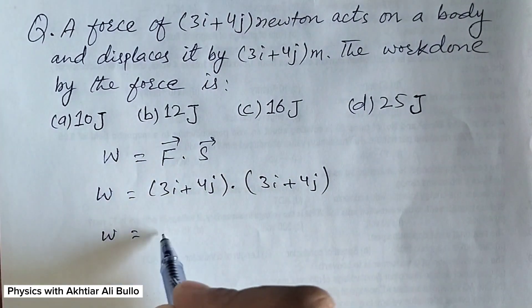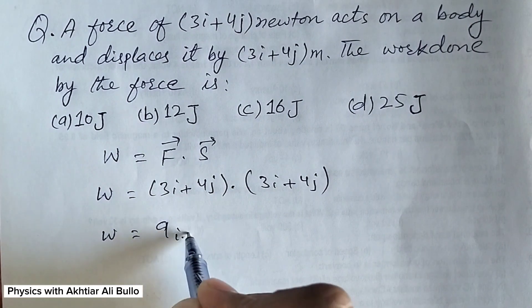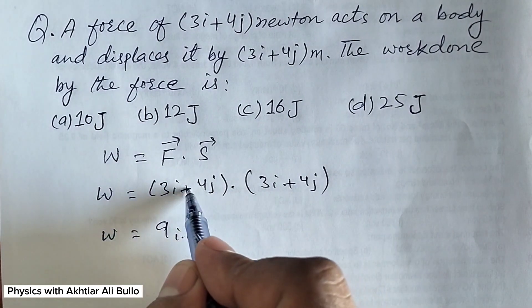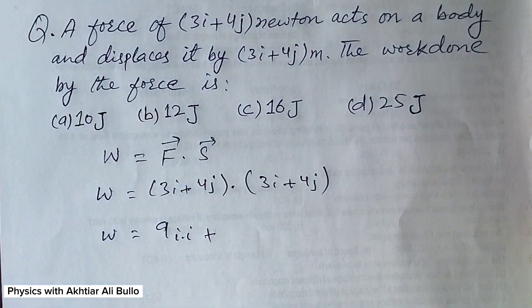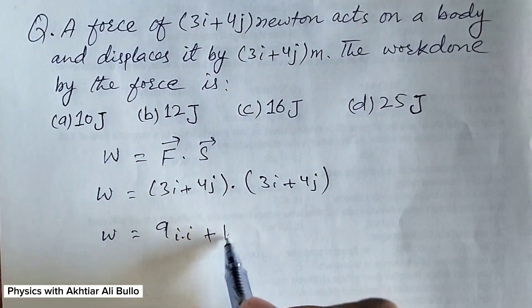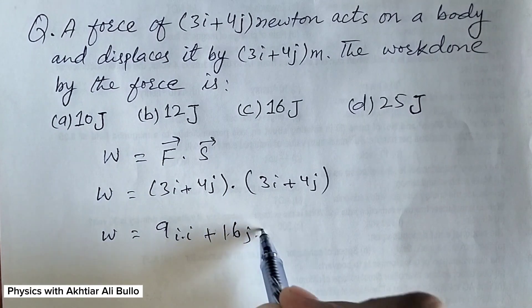So 3 times 3 is 9, i dot i, plus 4 times 4 is 16, j dot j.